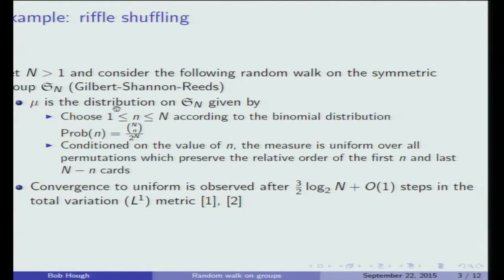I'll just give a classical example. There's an old model of riffle shuffling cards, which is you take a deck of n cards and you split the cards at some point into two piles, according to the binomial distribution on the size of the piles. That's the Gilbert-Shannon-Reeds model, so if I haven't made a mistake.